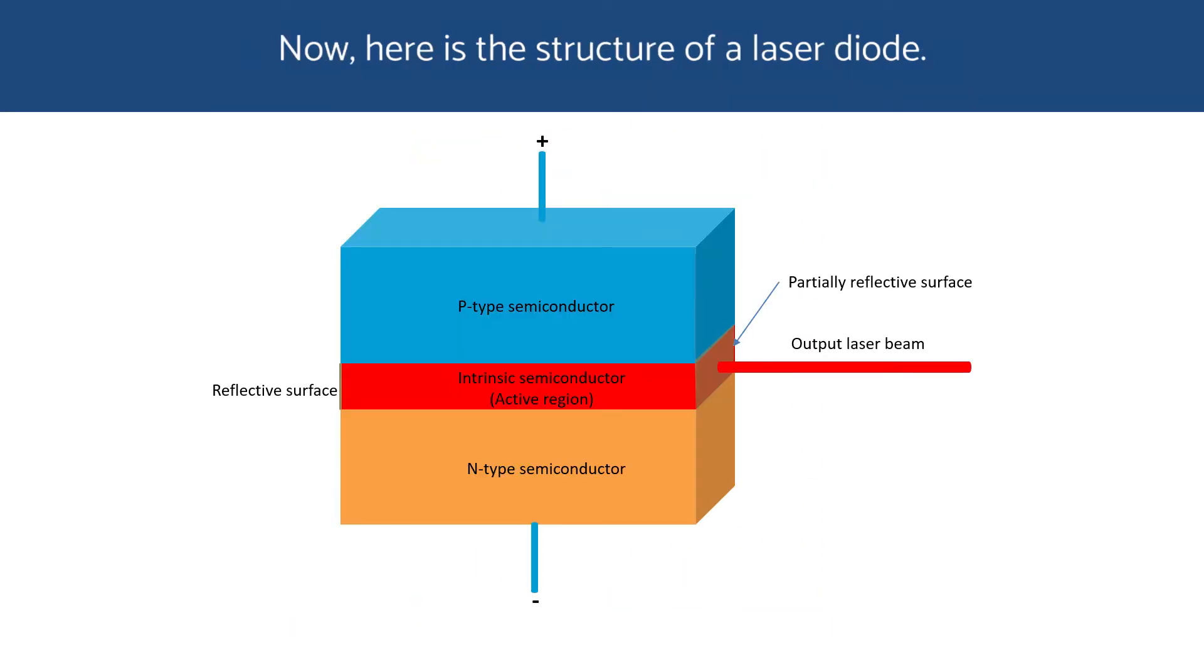Now, here is the structure of a laser diode. In addition to the N-type and P-type regions we discussed in the previous video, there is an intrinsic region of undoped semiconductor material, also known as the active region. Electrons and holes are pumped into this region to recombine and emit light. Because of its refractive index difference with the N-type and P-type materials, the intrinsic region acts as a waveguide that will guide light along the region, perpendicular to the direction of the current.